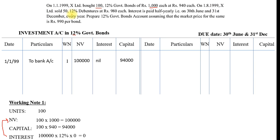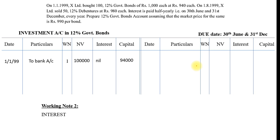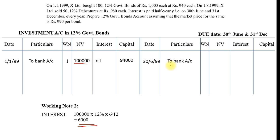Next, on 1st August 1999 we are selling. August comes after 30th June, so our due date falls before August — we first do the working for the due date. Working Note number two: on the due date you are eligible to receive interest on whatever you hold. We have Rs. 1,00,000 worth of bonds. Interest: 1,00,000 × 12% × 6/12 = Rs. 6,000 — because from December to June is a six-month gap. Posting: 30th June 1999, By Bank Account, Working Note 2 — interest of Rs. 6,000.